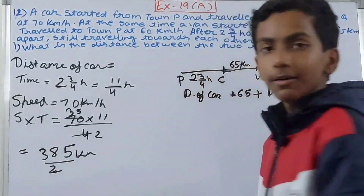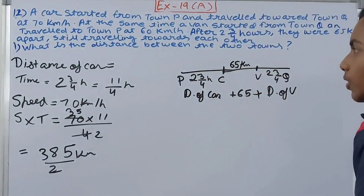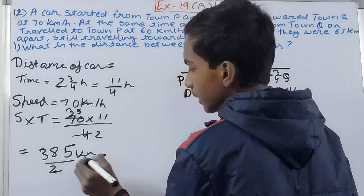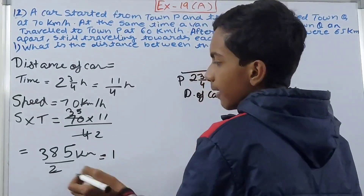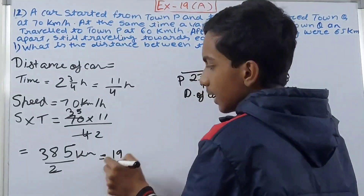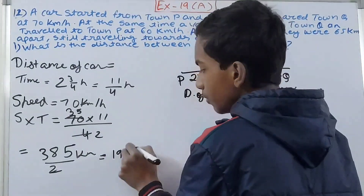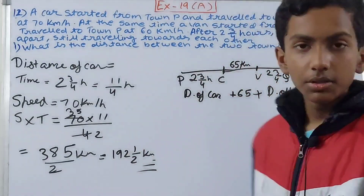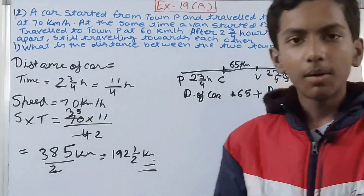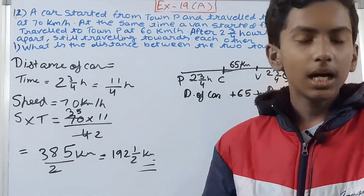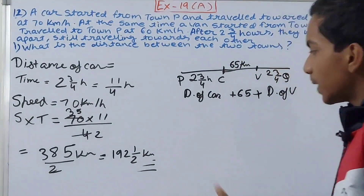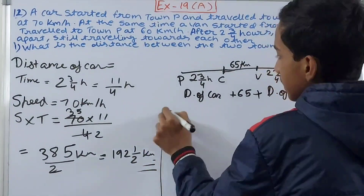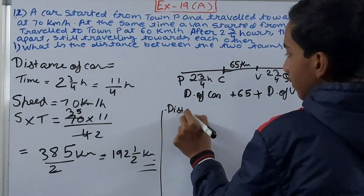Converting 385/2 to a mixed fraction: 385 ÷ 2 = 192 remainder 1, so the distance the car has traveled is 192½ kilometers.